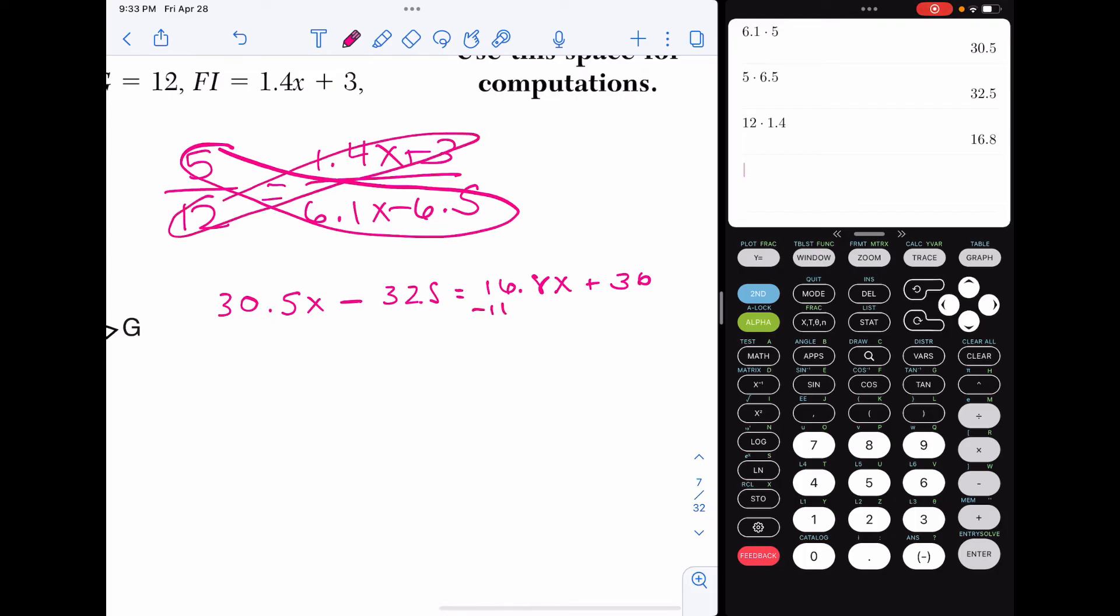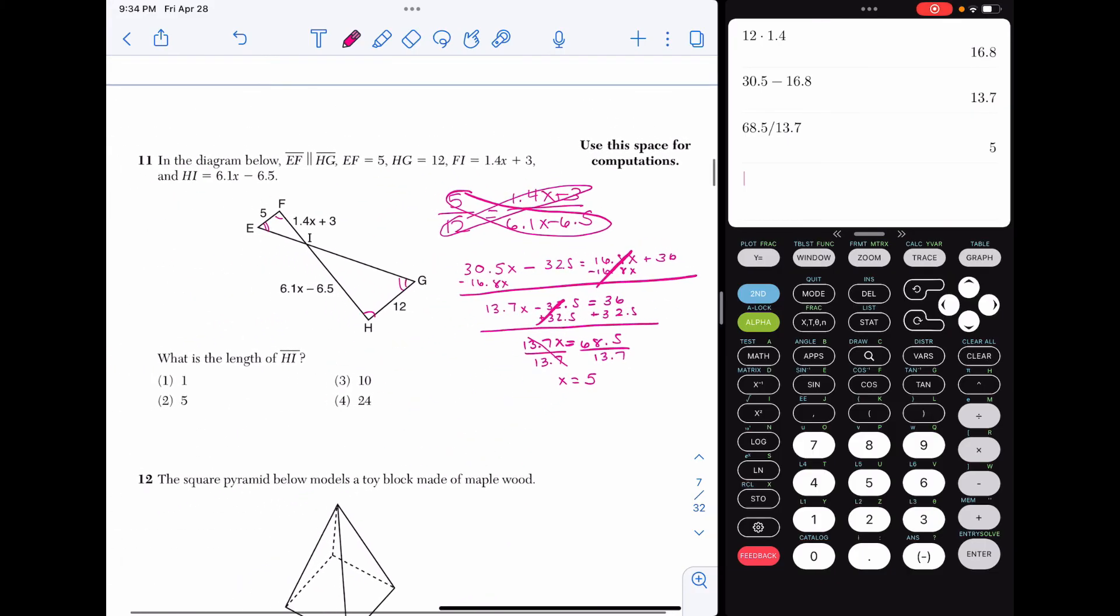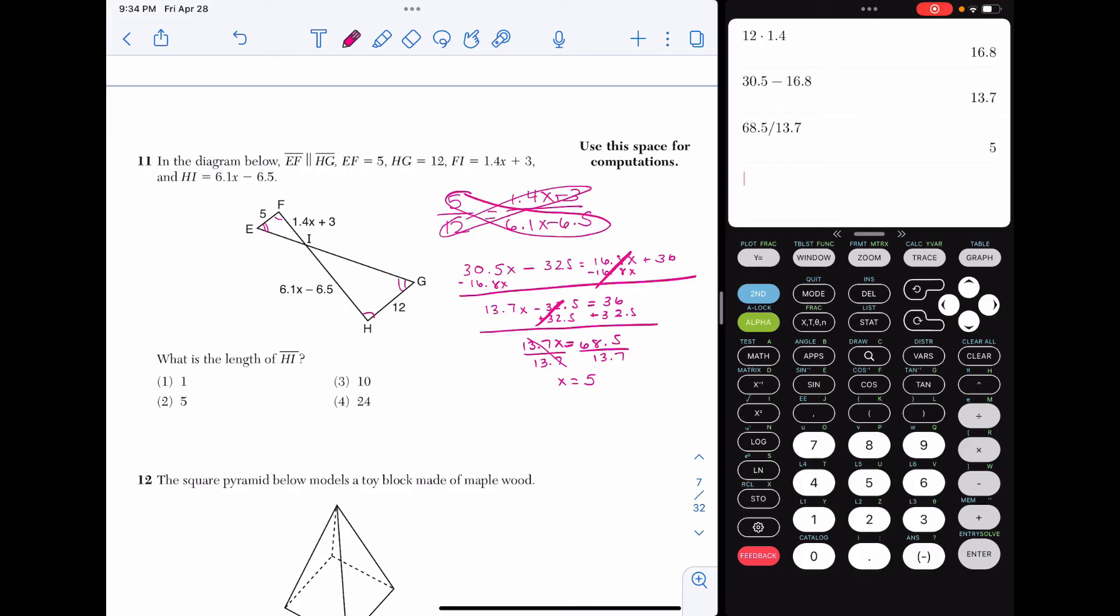Alright, let's solve by getting our variables on the same side. So subtract the 16.1X to the other side. So I have 13.7X minus 32.5 equals 36. Now get your numbers on the same side. And we're going to divide by 13.7 to isolate the X here. Okay, when we do that, we are getting that X is equal to 5. The problem is not asking for X though. So notice that's an answer choice, but that's not what we're looking for here. We have to plug it in for the length of HI. So 6.1 times 5 minus 6.5 gives us a length of 24. So choice 4.